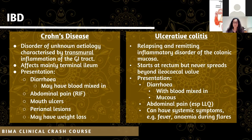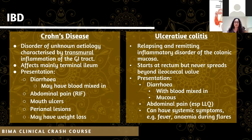Ulcerative colitis can also cause systemic symptoms like fever and anaemia during flares. One key difference is that ulcerative colitis is a relapsing and remitting disorder - it's not a continuous period of constant diarrhoea and abdominal pain. Patients have flares during which they get these systemic symptoms, but it's not all the time. That's another clue pointing towards UC over Crohn's.